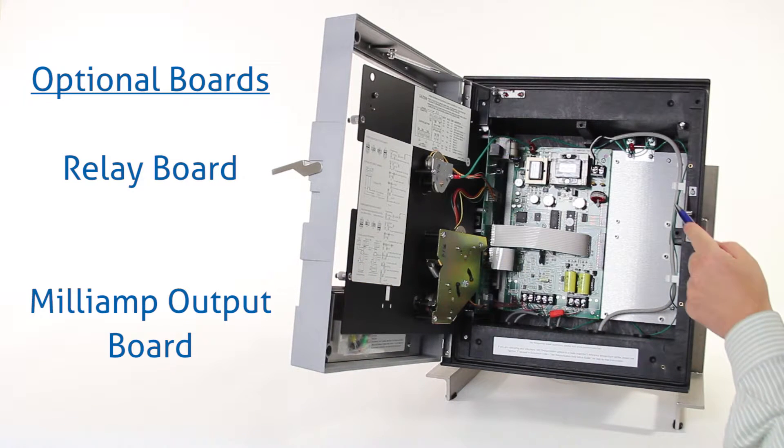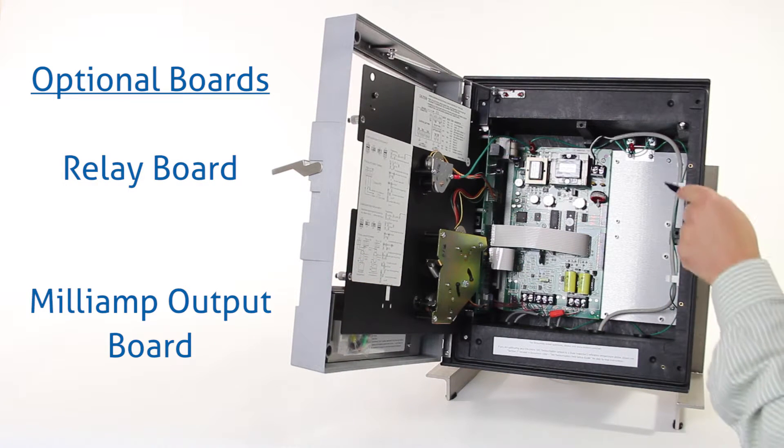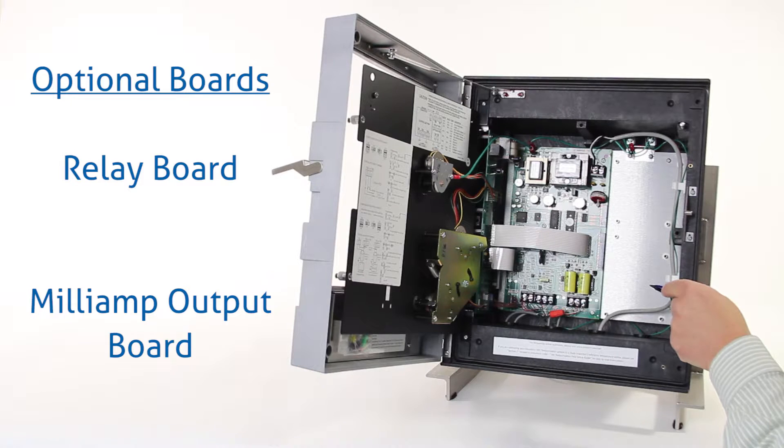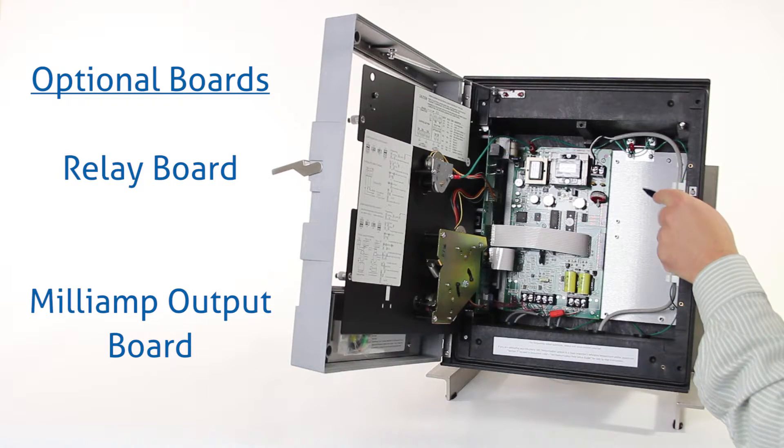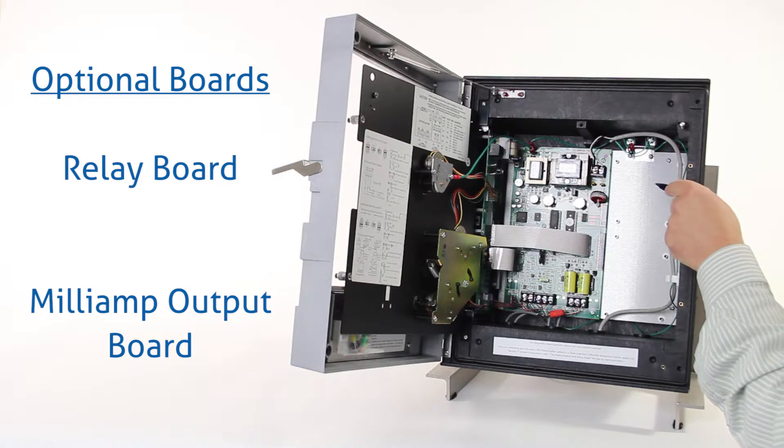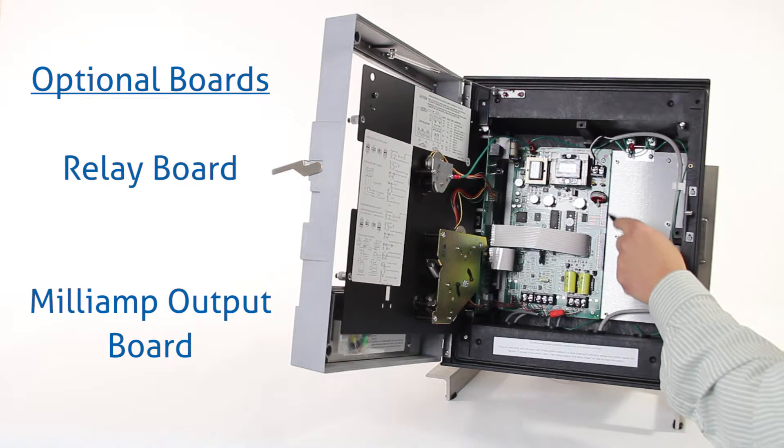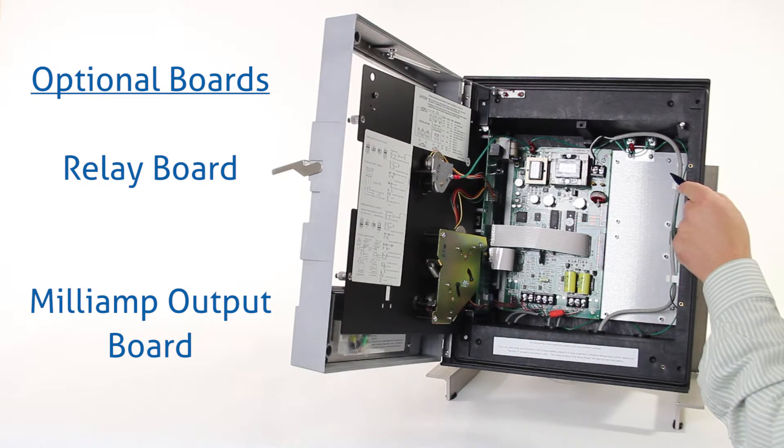Back inside the unit we see we have some empty space. In this case, if we actually had some option boards, if we had a relay board it would mount on the top right-hand side in the back of the case. It would plug into the motherboard in this connector here. You can order the recorder with or without relays.